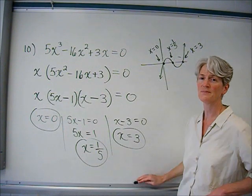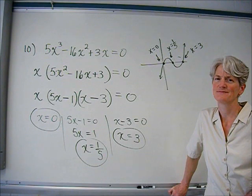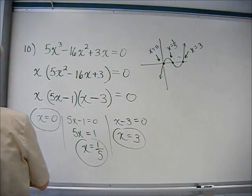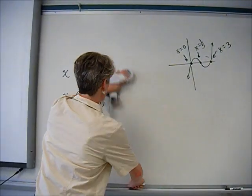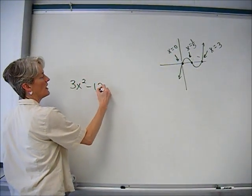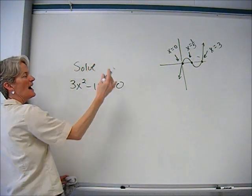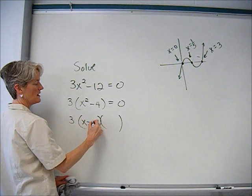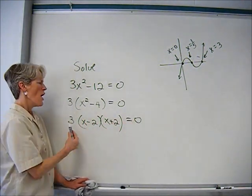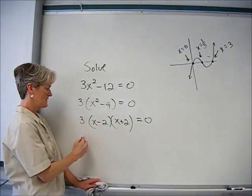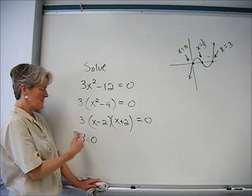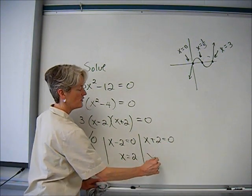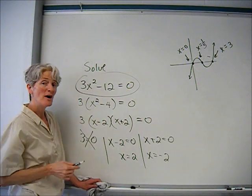Sometimes students get mixed up — if I factor out a number instead of a variable, is that number also a solution? For example, in 3x² minus 12 equals zero, I factor out a 3, then factor the difference of perfect squares. I have three things multiplied to equal zero. Does three equal zero? No, that can never be true — so three is NOT a solution. Only the binomial factors give solutions: x equals 2 and x equals negative 2. It's a quadratic, so it has exactly two solutions.